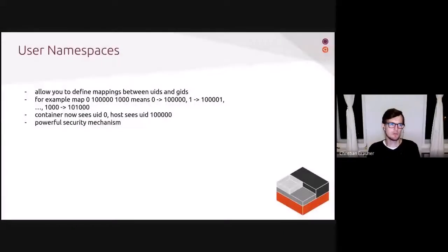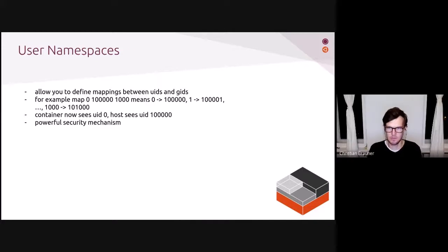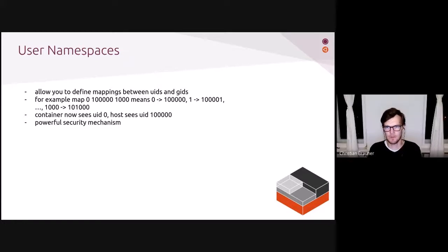User namespaces don't just concern themselves with uid and gid mappings — they also isolate capabilities, which is another security mechanism in the Linux kernel. So instead of asking 'do I have a given capability?' you're asking 'do I have a given capability in my current user namespace?' Some capabilities are checked against the initial user namespace or the host user namespace, so a container can never have those capabilities on the host.